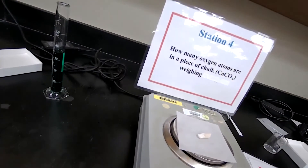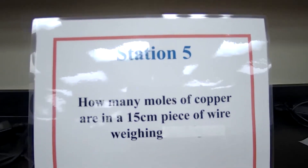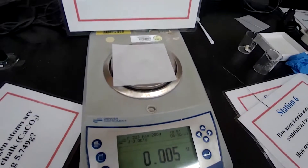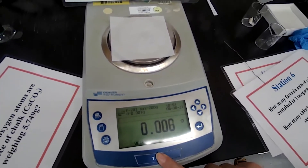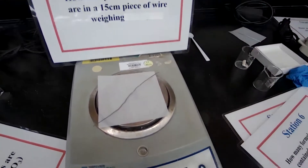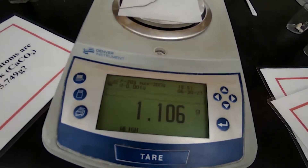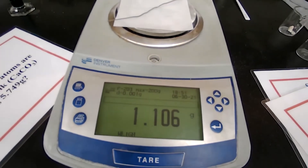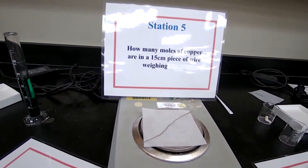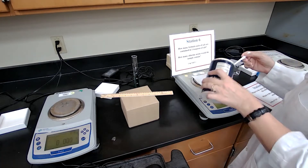At station 5, you have a 15-centimeter piece of copper. You measure the mass, record the number from the scale, and do the calculation to answer the presented question. The questions are posted on the paper in the background — you can see them in the video and also in the procedure part of experiment 4 in the lab manual.